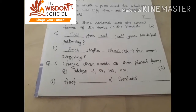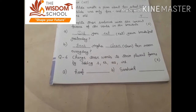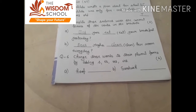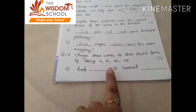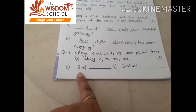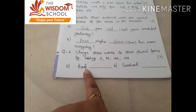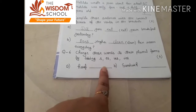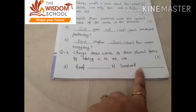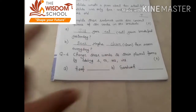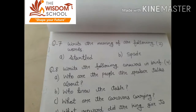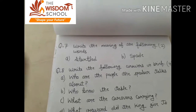Question number six: change these words to their plural forms by adding S, ES, VES, or IES. Hoof — F ke jagah kya aayega? VES. So: hooves. Sandwich — CH hai to kya aayega? ES. So: sandwiches. Write the meaning of the following words.